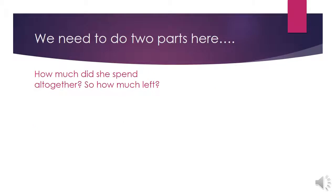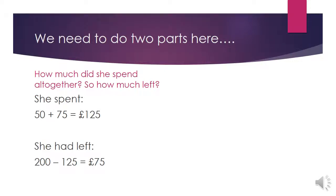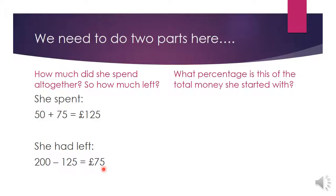We need to do two parts here. The first part is to work out how much money she had left — how much she spent altogether, and therefore how much was left over at the end. She spent £50 and £75, so altogether she spent £125. She started with £200 and spent £125, so she had £75 left.